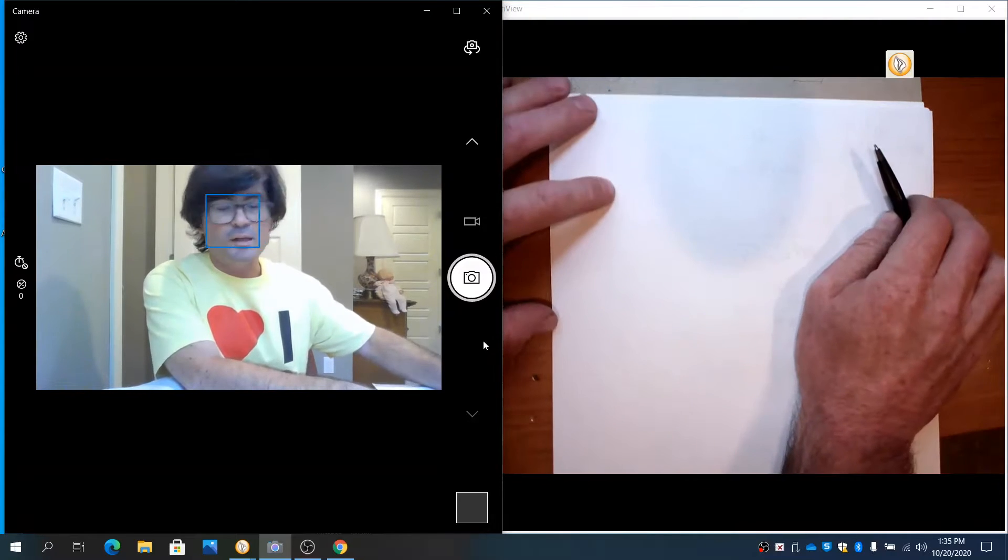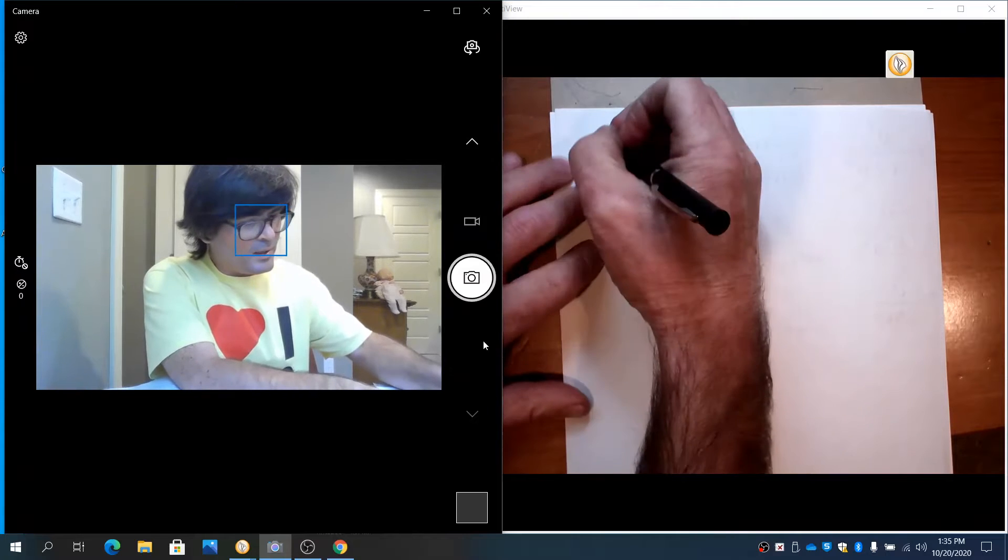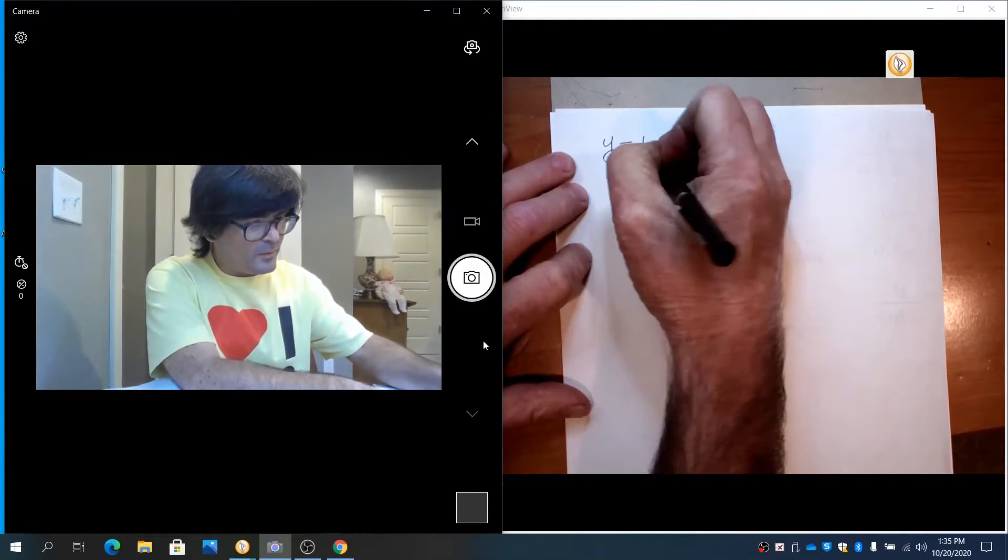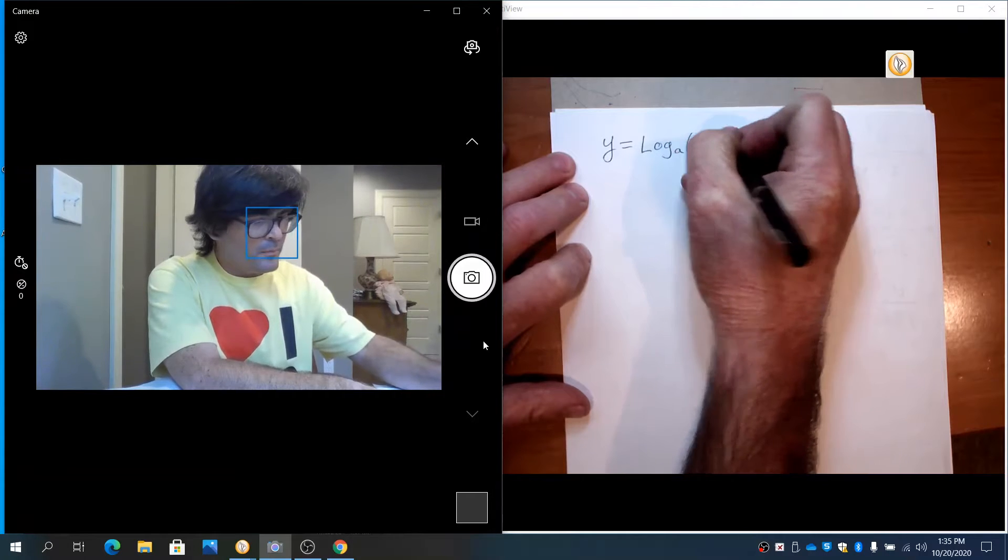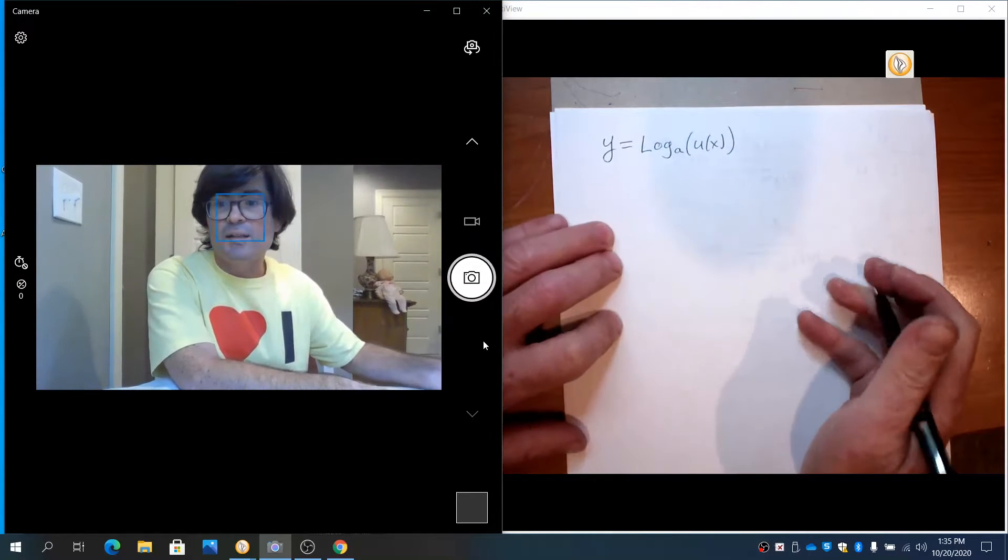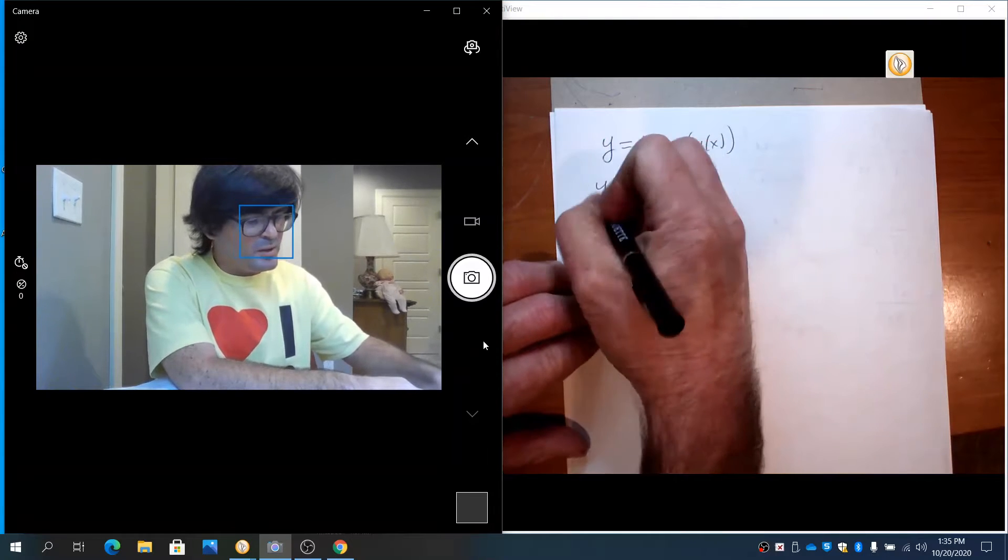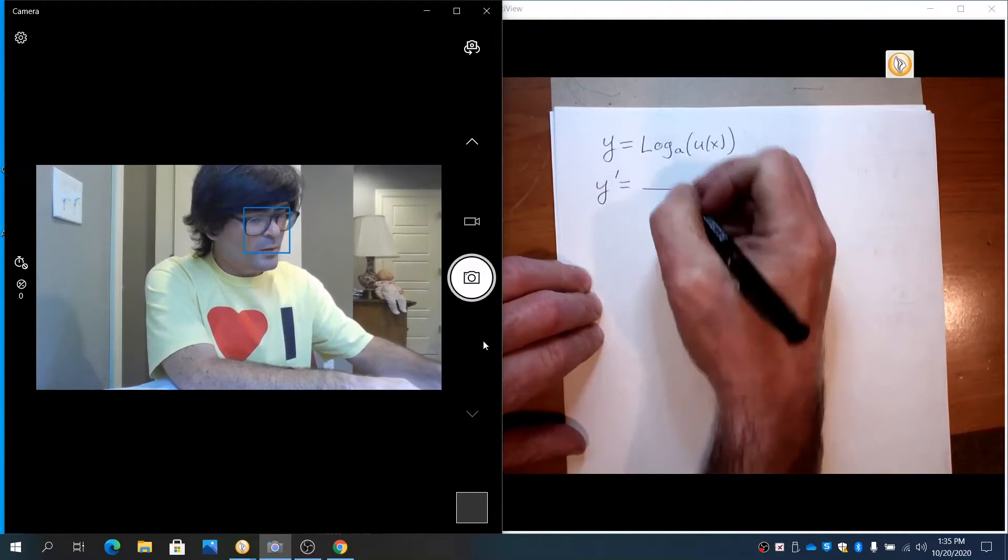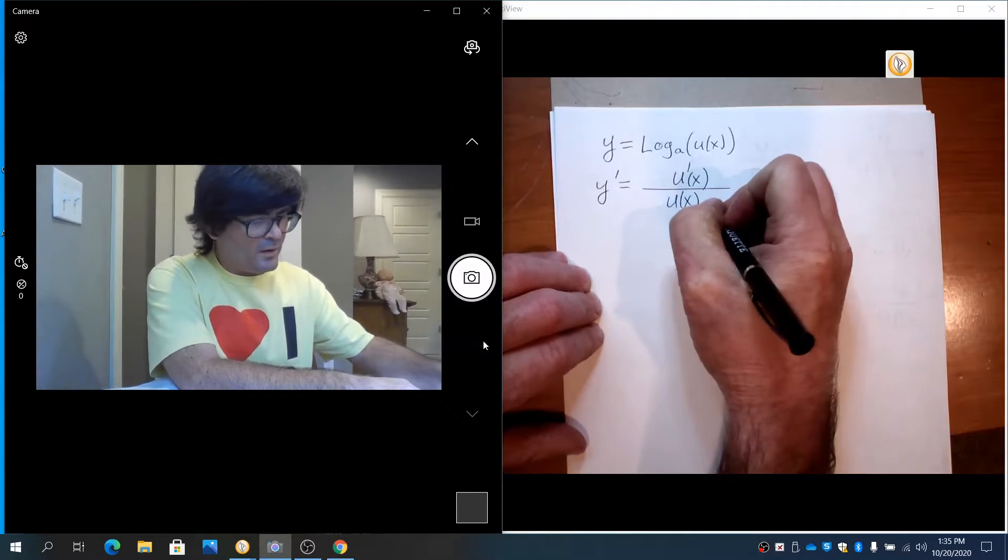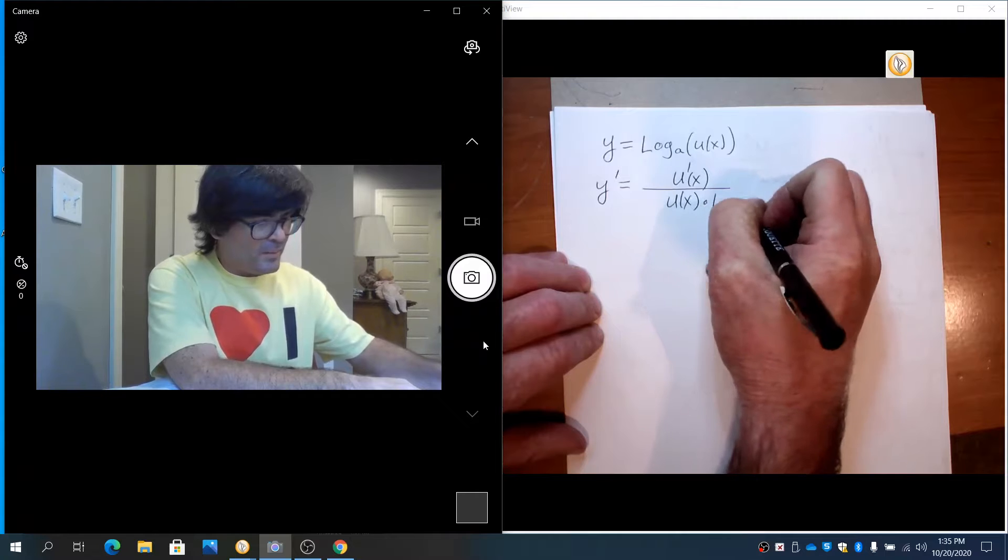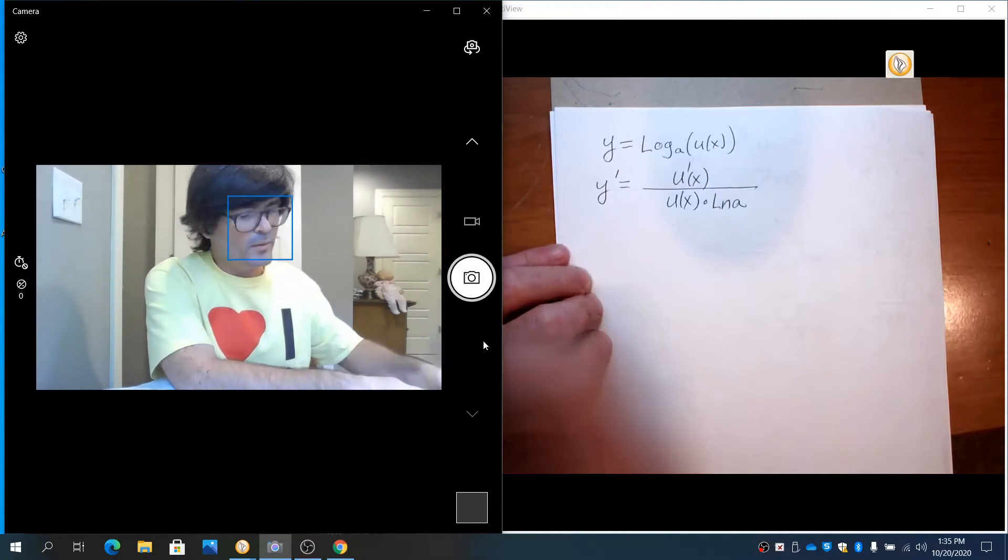To start with logarithms, if you have any general logarithm like this, log base a with a function u(x) in the argument, the derivative has three parts. You have u prime on top, u on bottom, and then natural log of the base a on bottom also. That's the formula.